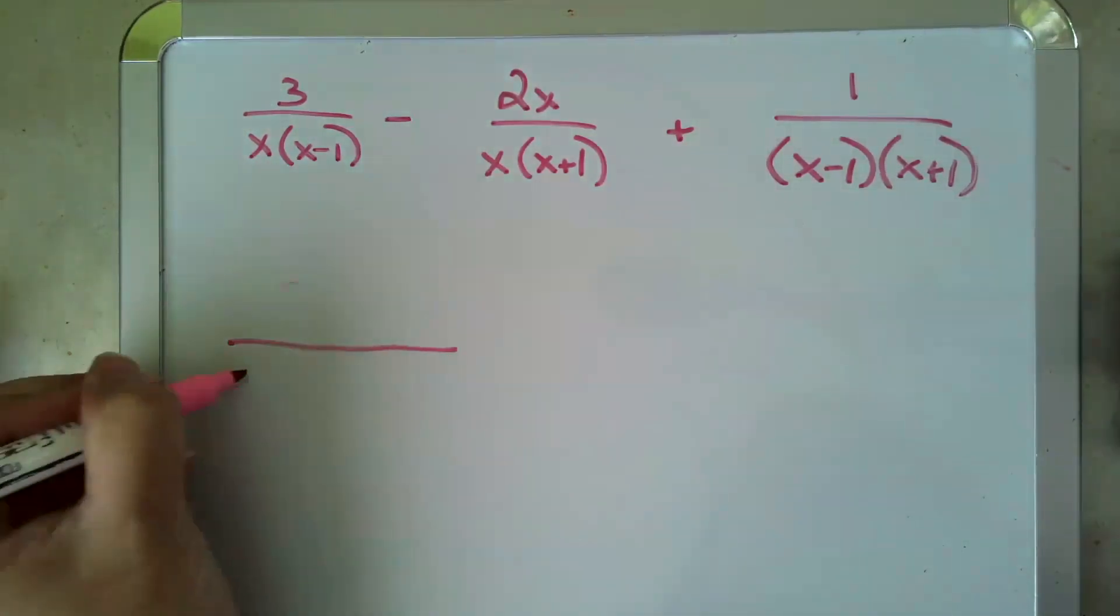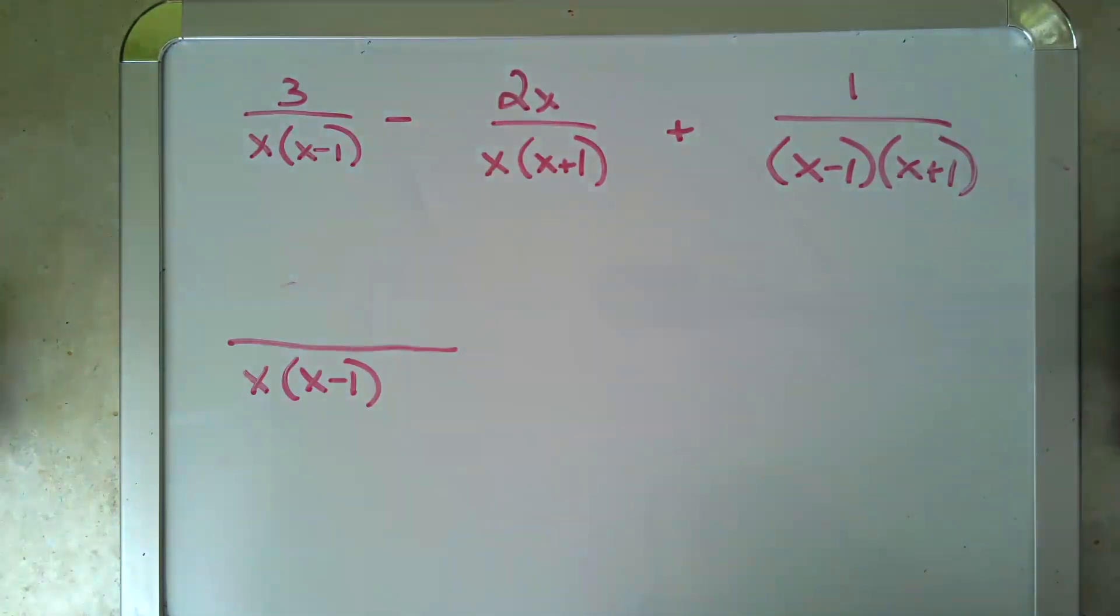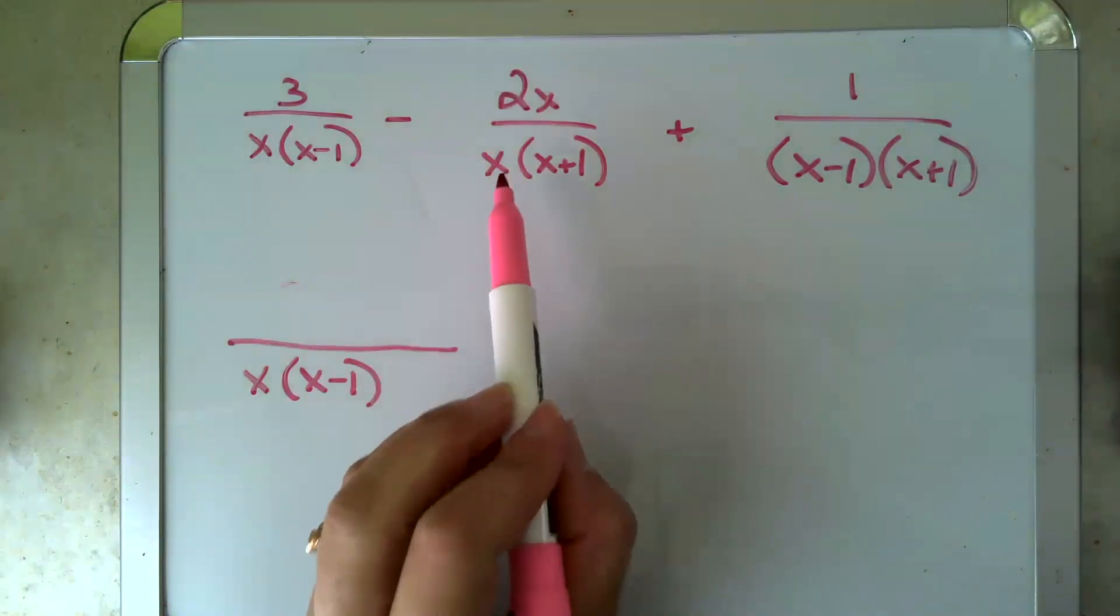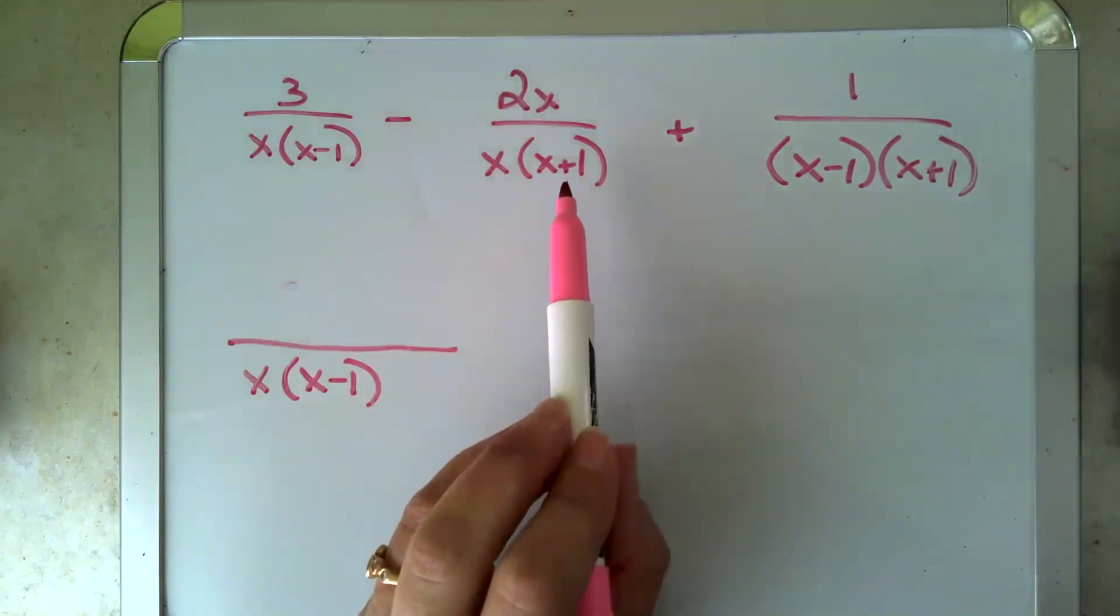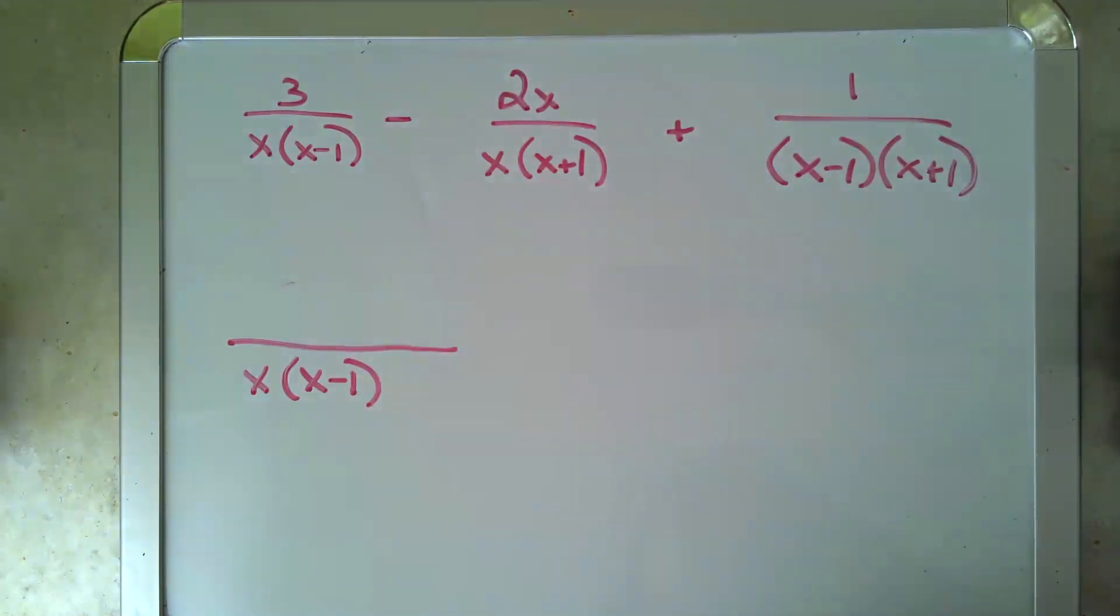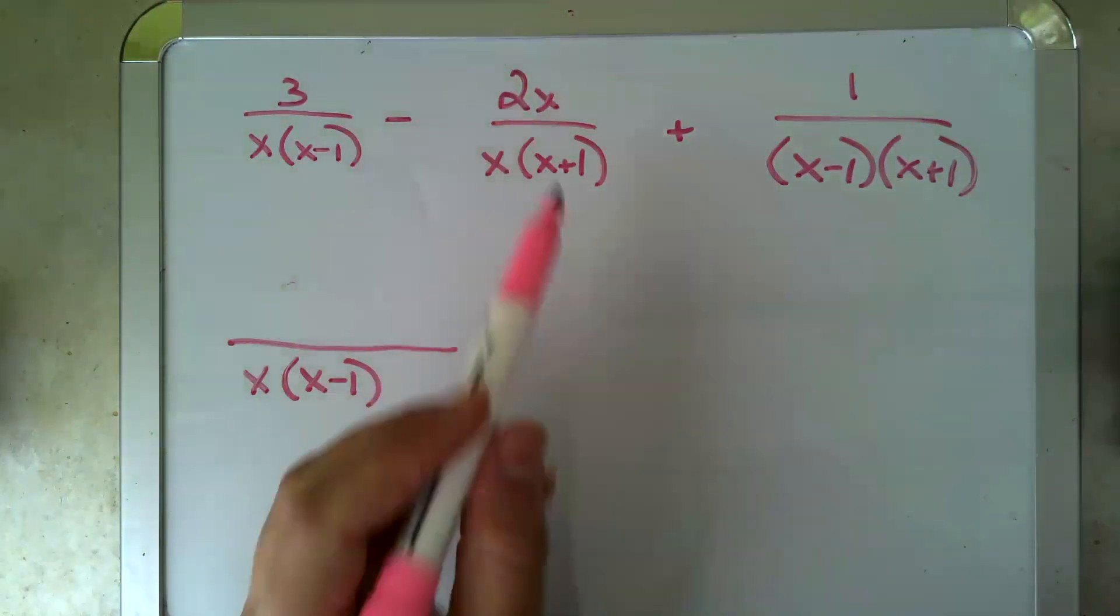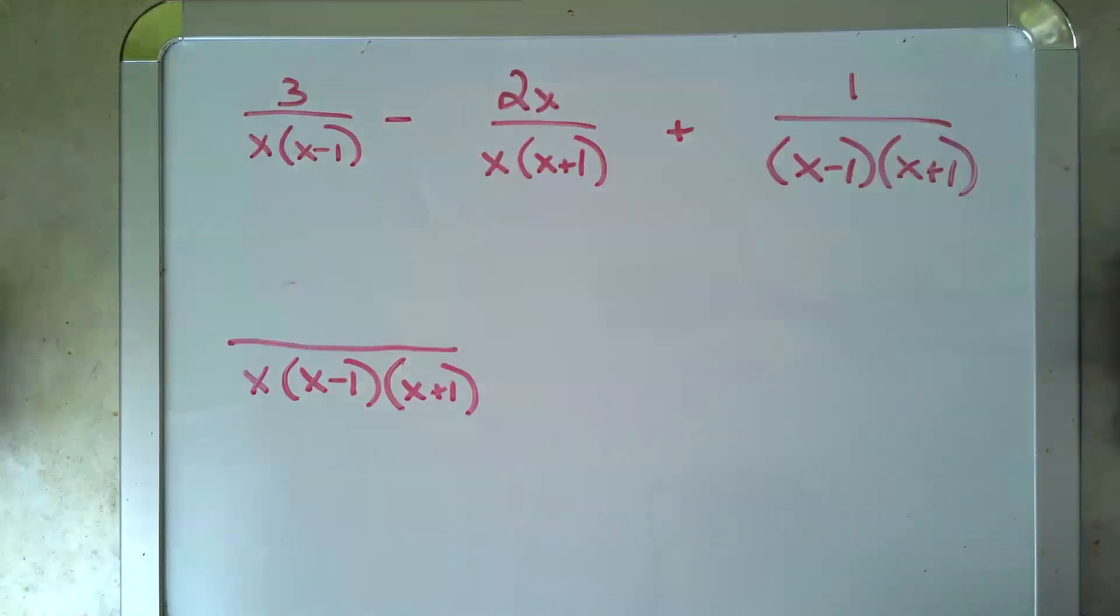this fraction has an x times an x minus 1. This fraction repeats that x, so I don't need to put another one in there, but it also multiplies in an x plus 1. So I know in order to combine these fractions, I'm going to need that x plus 1 in the denominator as well.